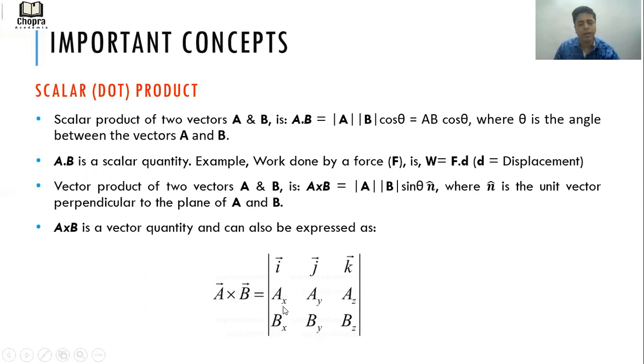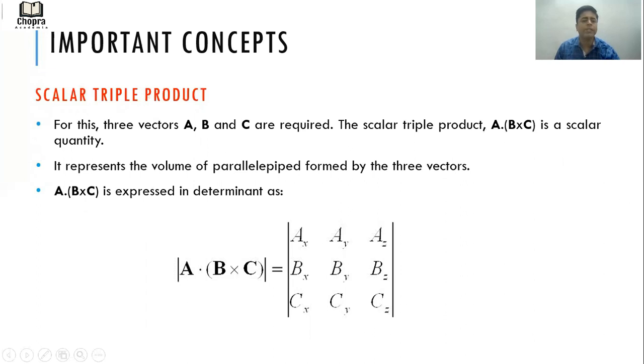What is a scalar triple product? Scalar triple product is for three vectors A, B, C. The scalar triple product is denoted by A·(B×C) and the final output is a scalar quantity. It represents the volume of parallelepiped formed by the three vectors A, B, C.